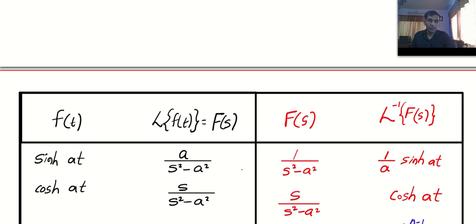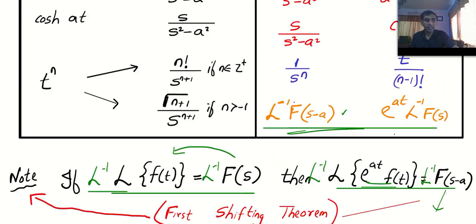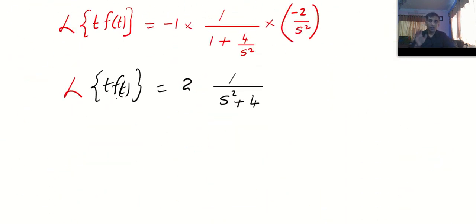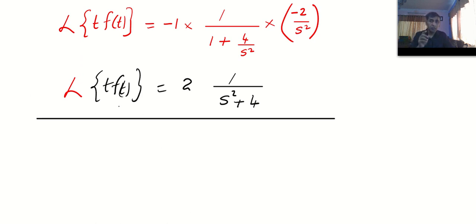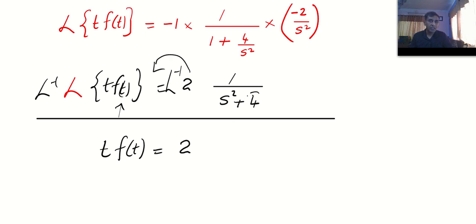Laplace of t into f of t equals — simplify, because s squared cancels — and you end up with 2 times 1 by (s² + 4). I hope you remember the formula of Laplace inverse. I am going to use the formula: Laplace inverse of 1 by (s² + a²) is 1 by a sin at. Now taking Laplace inverse on both sides: t into f of t equals 2 times (1/2) sin 2t, which is sin 2t. We want f of t, not t into f of t. So our answer is f of t equals sin 2t divided by t.